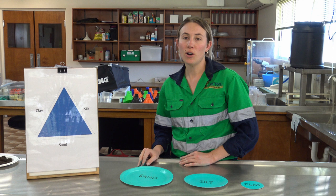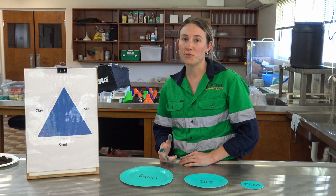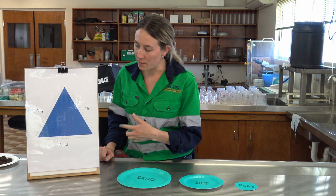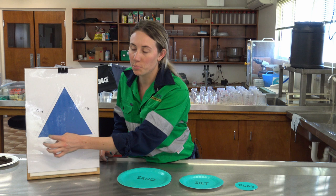Often you'll see your texture reading on your soil test. It could be, for example, a silty clay or a sandy clay. This diagram here gives you a bit of an idea of where your soil may sit in terms of texture. Silty clays may sit in the top of the triangle, whereas a sandy clay might sit towards the bottom down here.